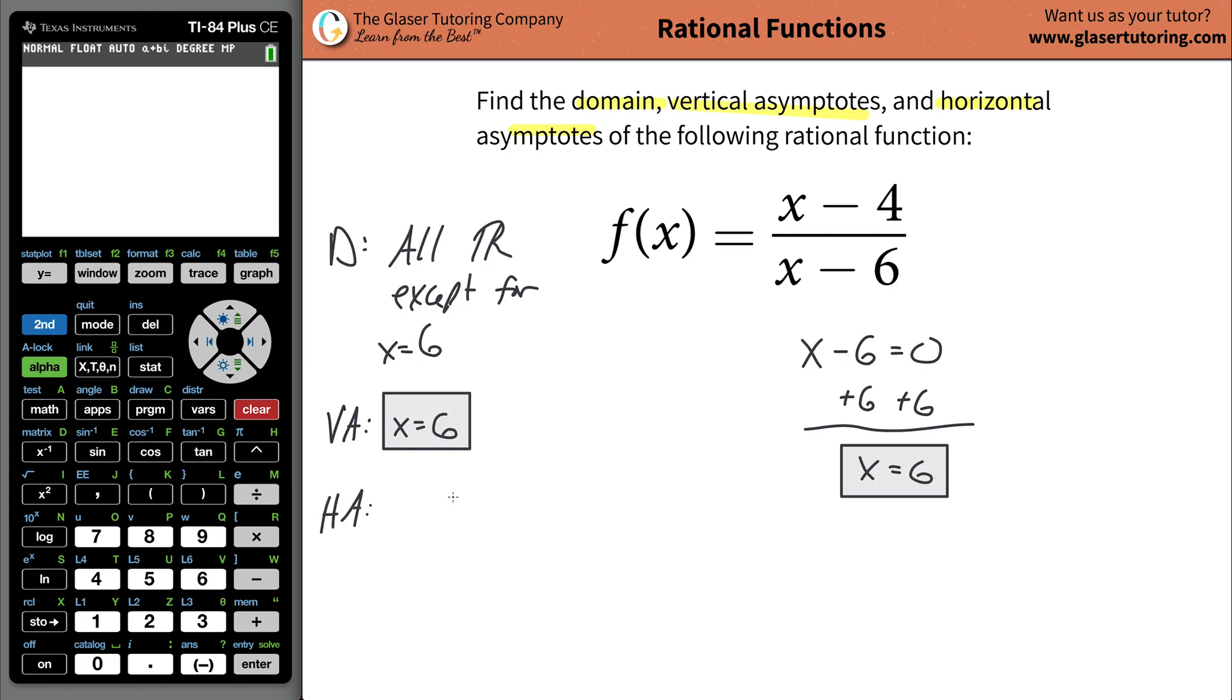So in order to find the horizontal asymptote, you first have to ask yourself a question. Is the function top heavy, equally heavy, or bottom heavy? Now to determine this, what you're going to do is you're going to look at the function and you're going to identify the highest power of x in the numerator, which is a one, highest power of x in the denominator, which is a one. And you're going to compare the exponents. If they're equal, this is known as an equally heavy function.